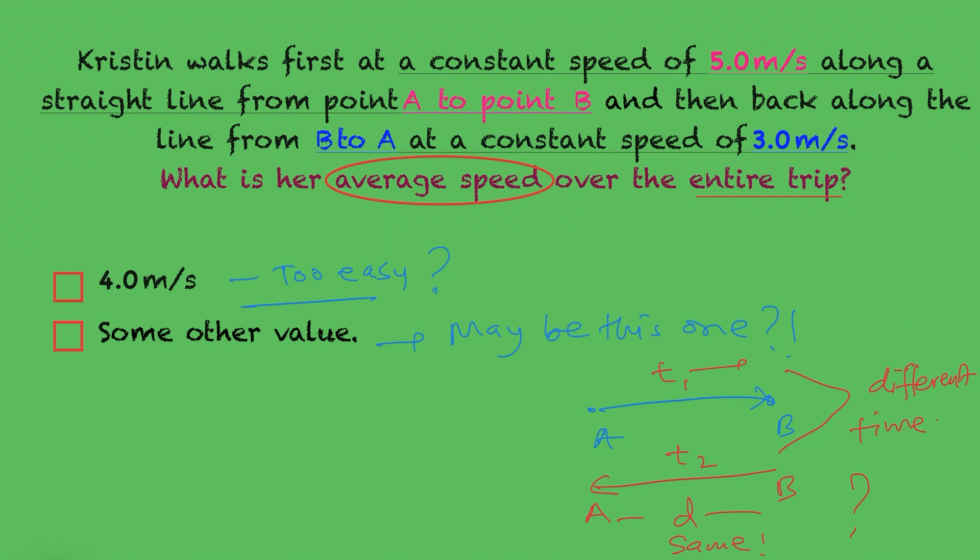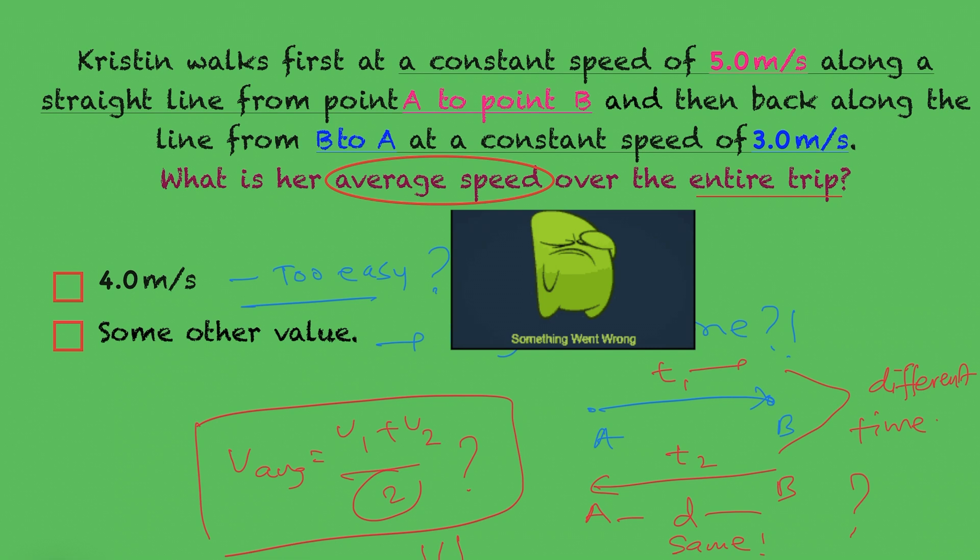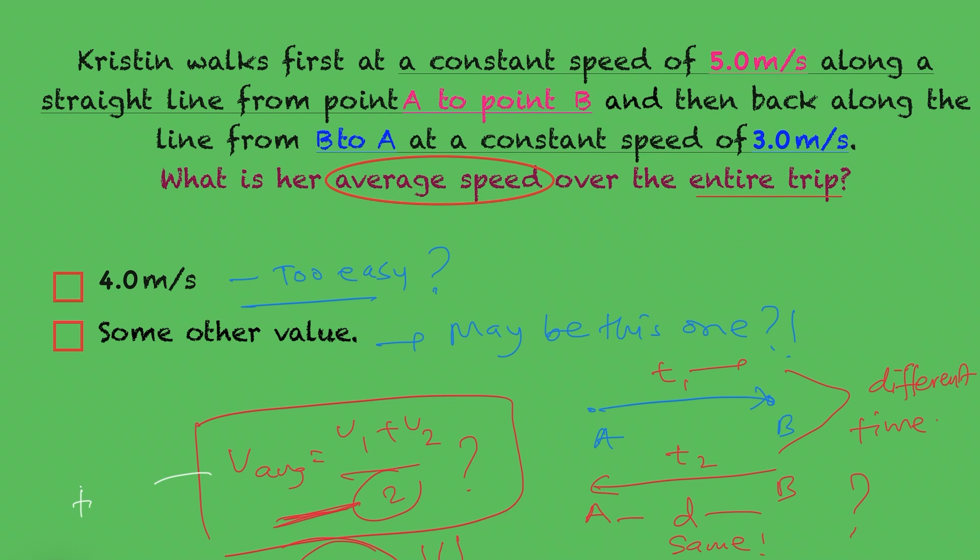If you know what it means, you can skip to the problem-solving steps. However, keep in mind that if you are thinking your answer is four meters per second, that is from adding five and three and dividing by two, you're probably missing some important concepts of the problem. So I'd suggest you please watch the whole video.